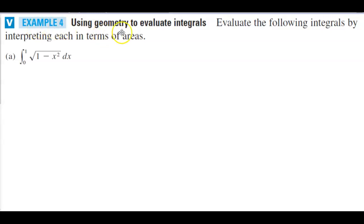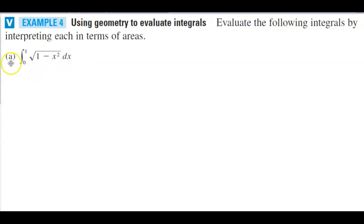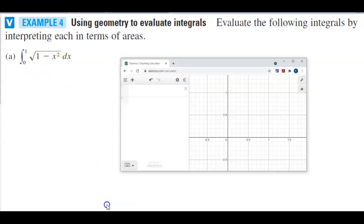Example four: using geometry to evaluate integrals. Evaluate the following integrals by interpreting each in terms of areas. So part a, we have the integral going from zero to one of the function square root of one minus x squared dx. Let's take a look at what this would look like on Desmos.